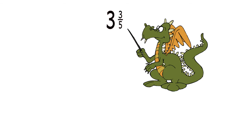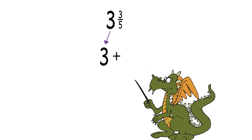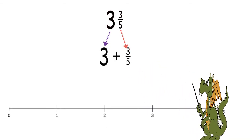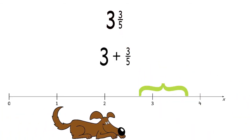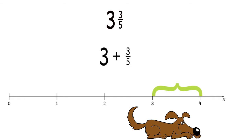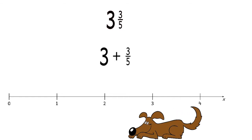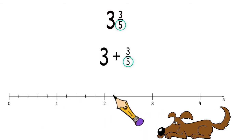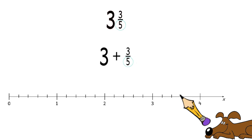In fact, we could write this as 3 plus 3 fifths. Therefore, we're looking at a number between 3 and 4 on a number line. But where exactly would it lie on a number line? First, we need to divide the spaces in between each number into 5 equal parts, because the denominator in the fraction tells us how much the whole number was divided into. Now we need to mark where 3 of the fifths would be located.